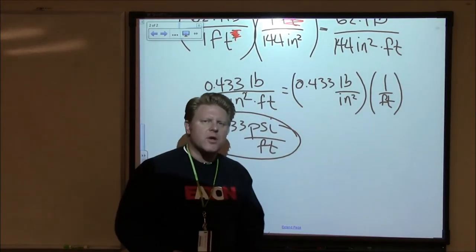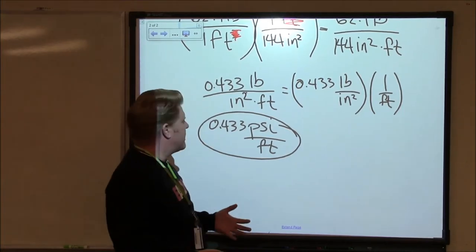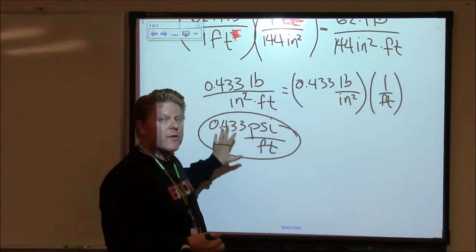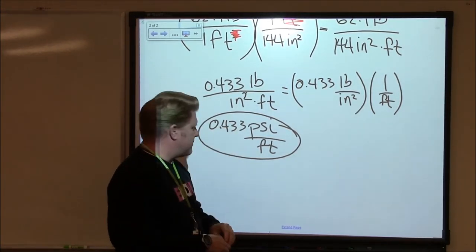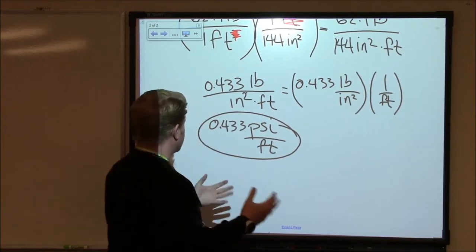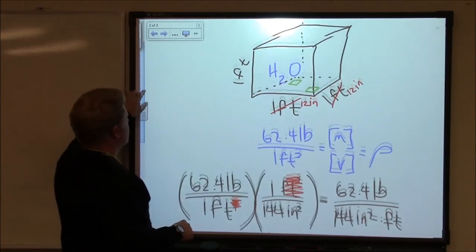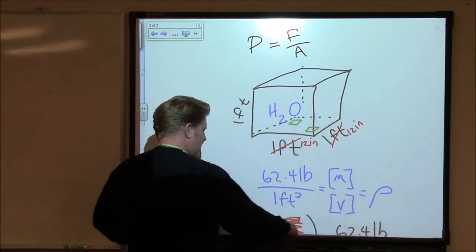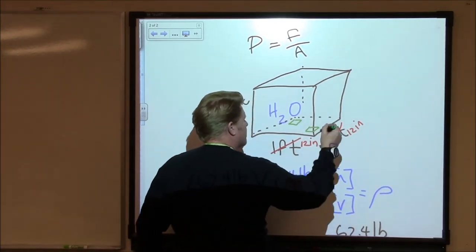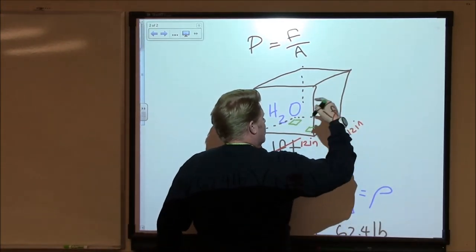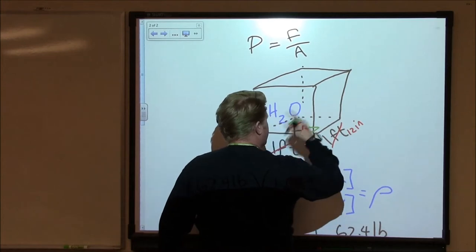Okay. So students and I have talked about this number, 0.433. We see where the number comes from, but what does it mean? We need to understand what we're talking about with this number. 0.433 pounds per square inch per foot. Hmm.